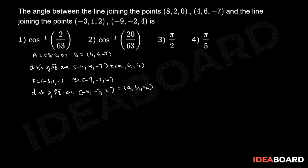Let theta be the angle between the lines. Therefore, we have cos theta equals A1A2 plus B1B2 plus C1C2 by square root of (A1 square plus B1 square plus C1 square) into root of (A2 square plus B2 square plus C2 square).